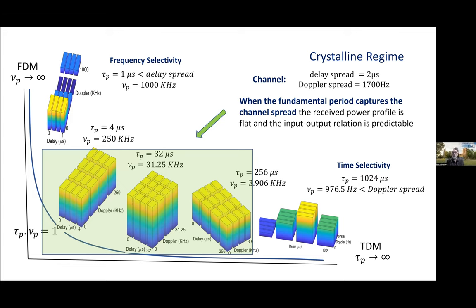So, this is a summary picture. So, just to be concrete, we're going to start with a particular doubly spread channel. So, delay spread, 2 microseconds. Doppler spread, 1700 hertz. And we fix m equals n equals 4. So, we've got 16 delay-Doppler bins.